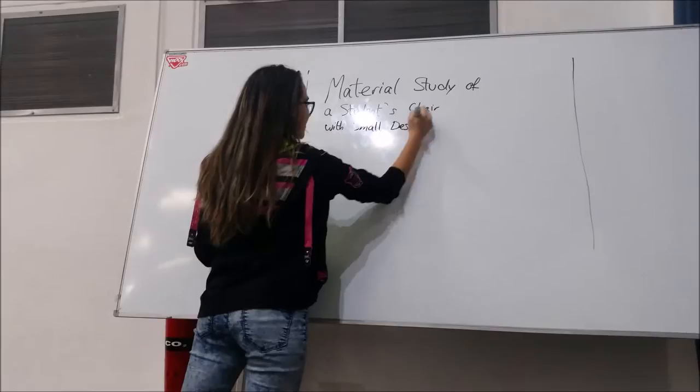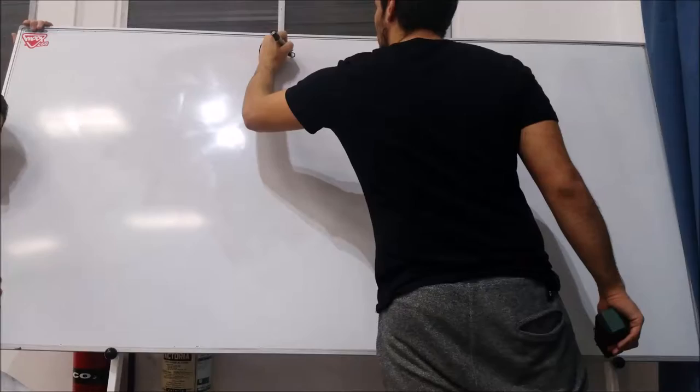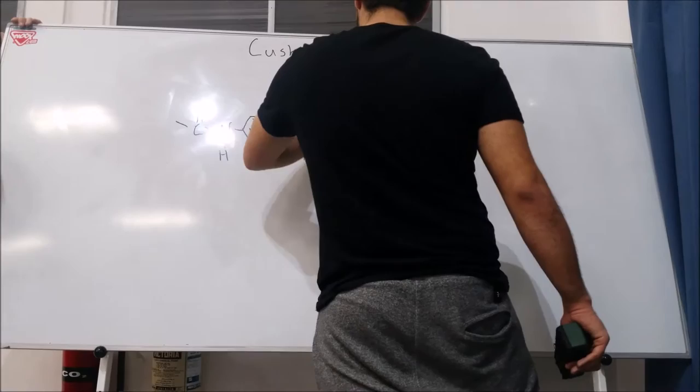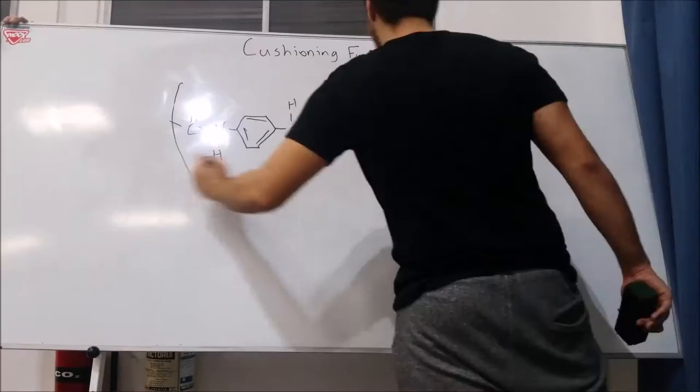The steel frame has no more than 0.3% carbon which makes it malleable but tough. The cushioning foam is one of the main parts since it must be comfortable for the student to sit on. The diagram shows the chain reaction of a unit compound of the polymer.